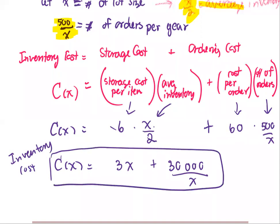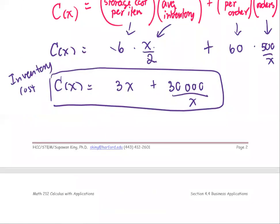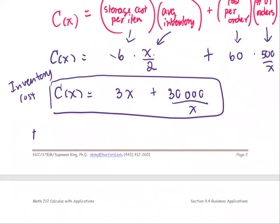Based on this cost function, our goal is to find how many times per year - that is, how many orders per year - which is 500 divided by x, where x is the lot size. The goal is to minimize the cost.